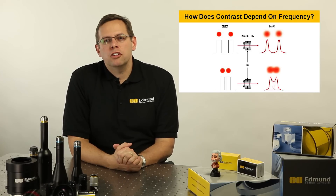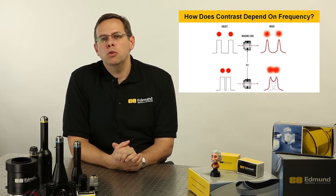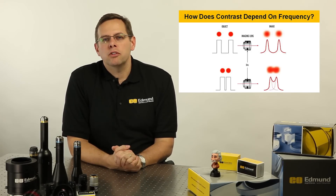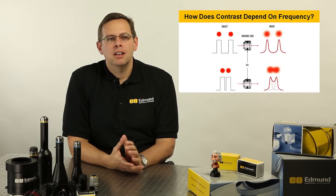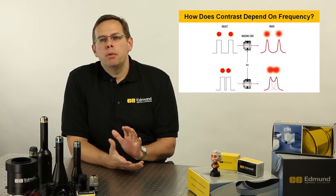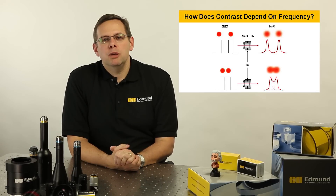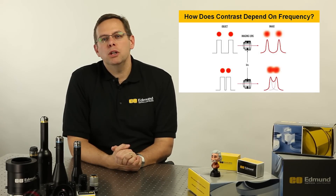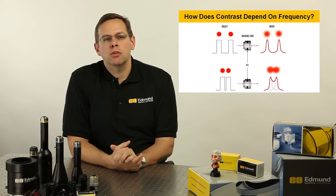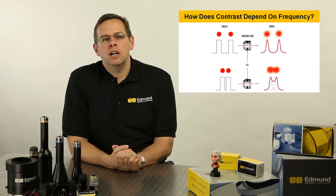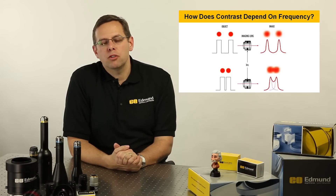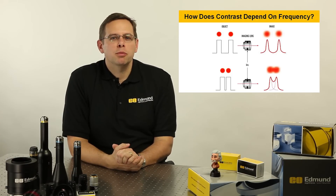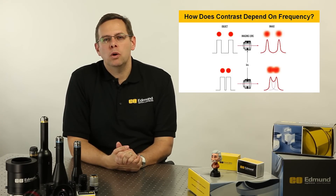Cameras have a noise floor — usually around eight to ten percent noise, though some are lower and some are higher depending on sensor design and camera electronics. When you get below that level of contrast, or even close to it, getting repeatable results at the resolution you want becomes difficult. You always want the contrast levels of the lens in the twenty to thirty percent range if possible. If you get down to ten or five percent, you're probably not going to see the detail you want.